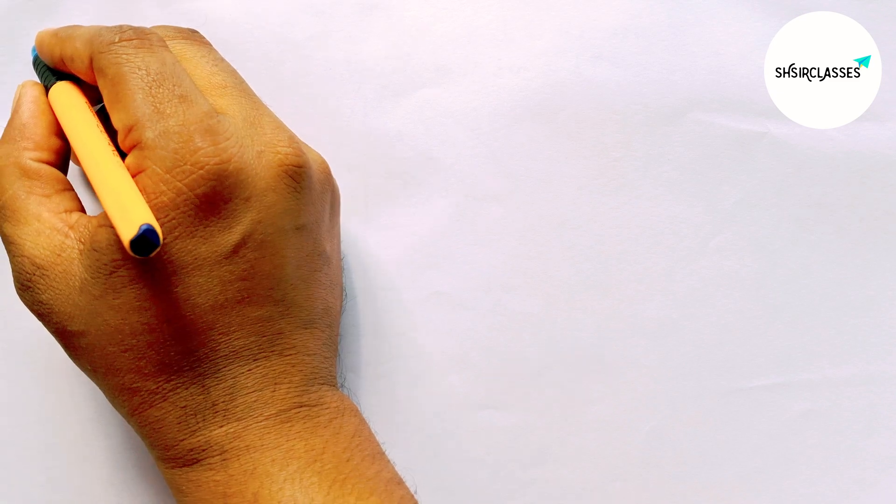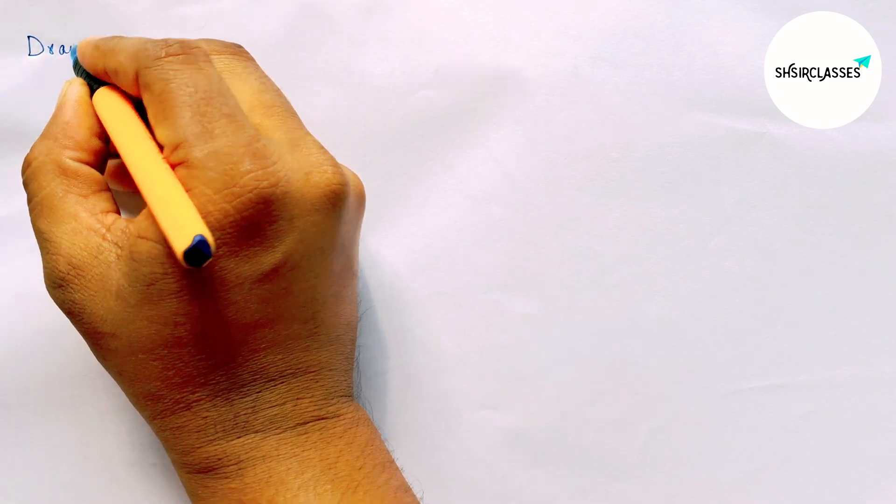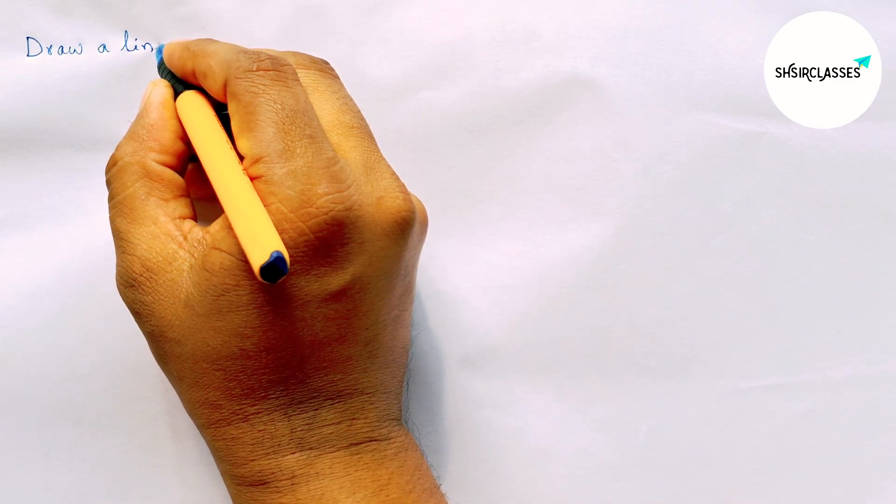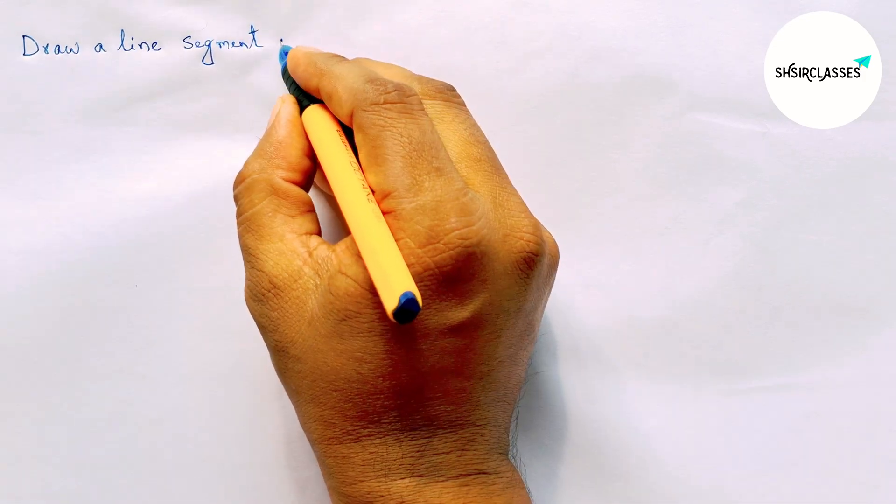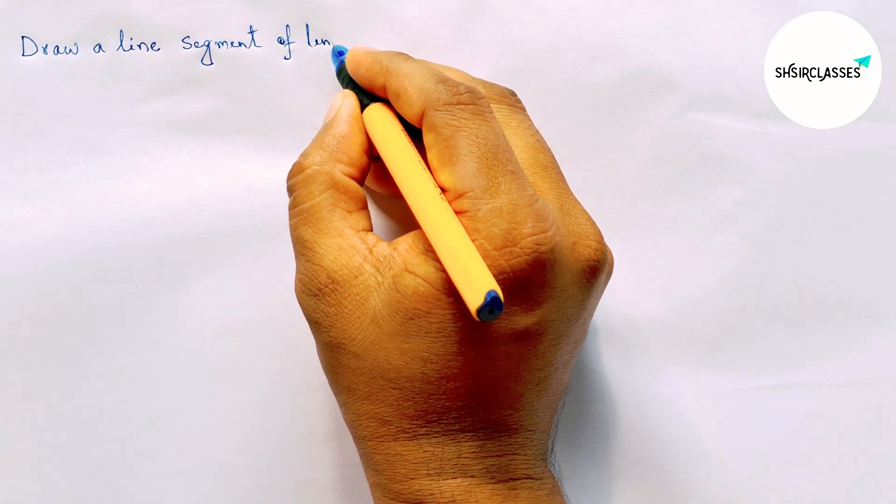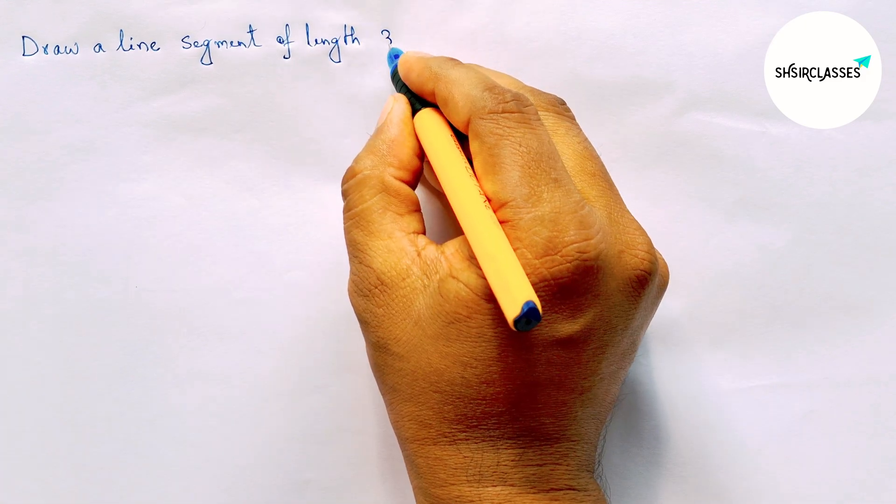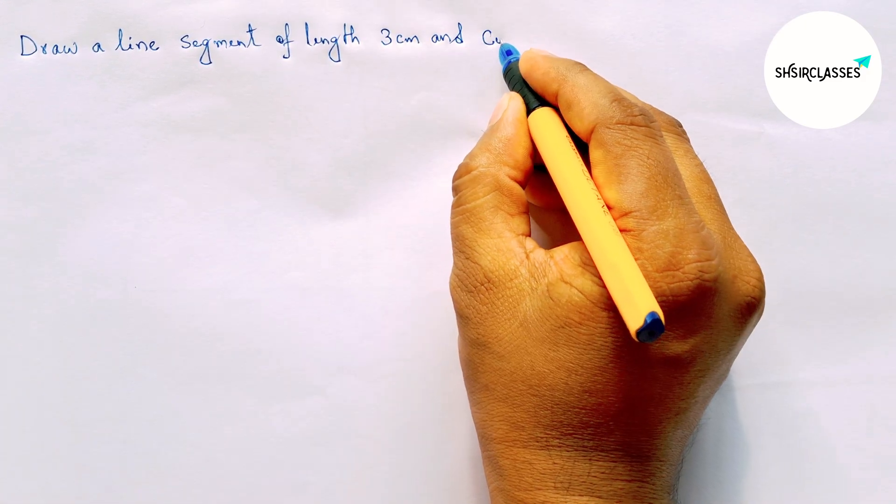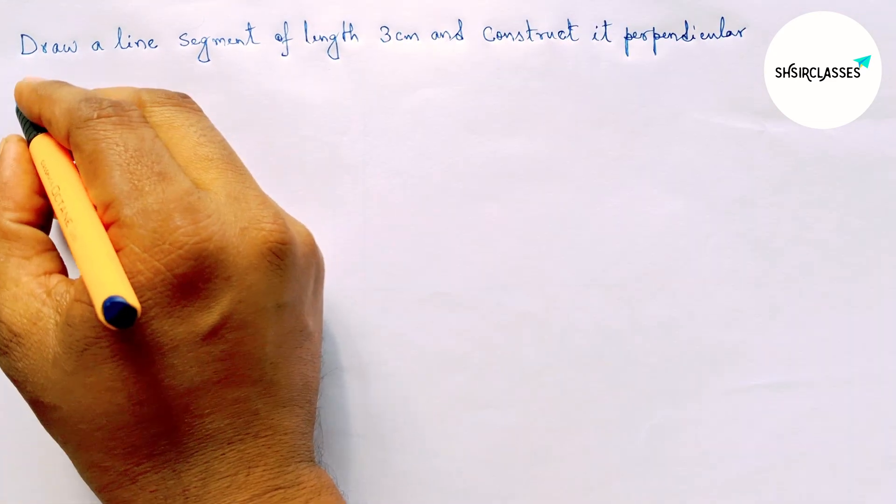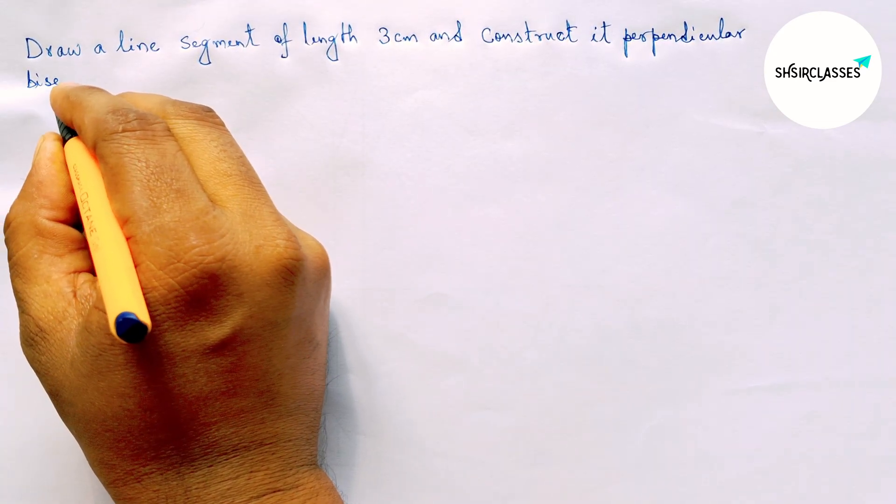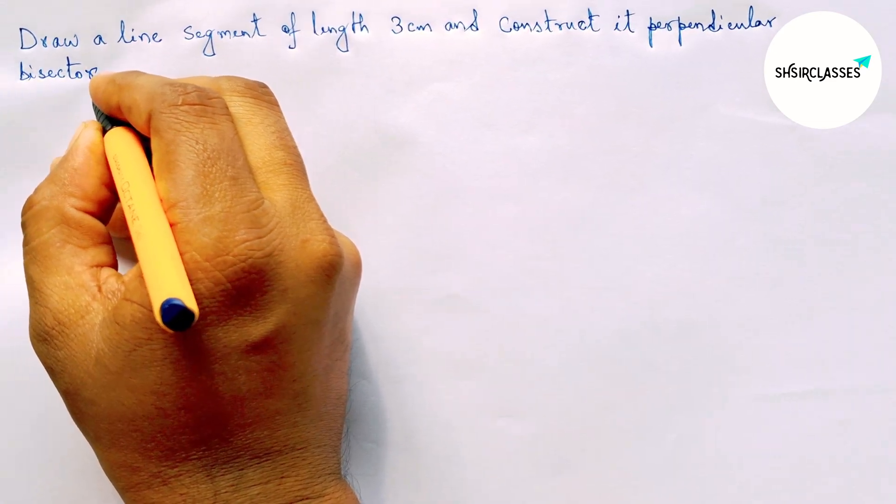Hi everyone, welcome to Say Share Classes. Today in this video, draw a line segment of length 3 centimeter and construct its perpendicular bisector to the line segment in easy way. So please watch the video till the end.